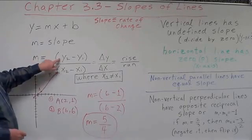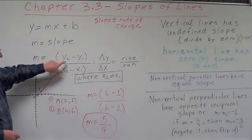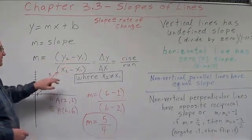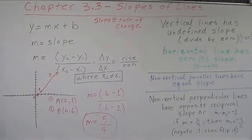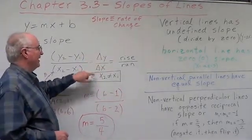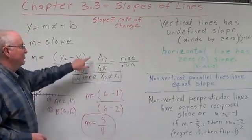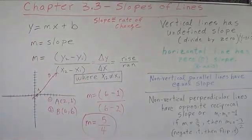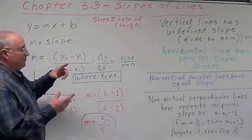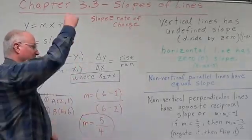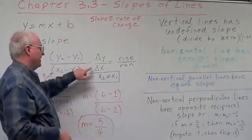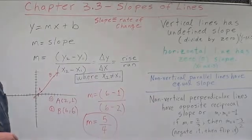this equation where m equals the quantity y2 minus y1 divided by the quantity x2 minus x1, or delta y divided by delta x, where delta represents the change in y. What is the change in y, what is the difference, how far did y change, how far did we go up, divided by the change in x or how far did we go across.